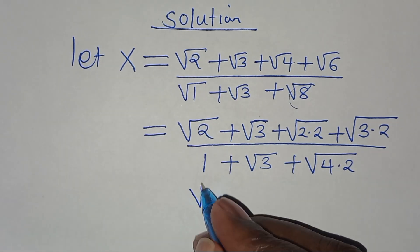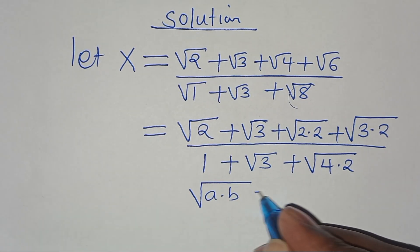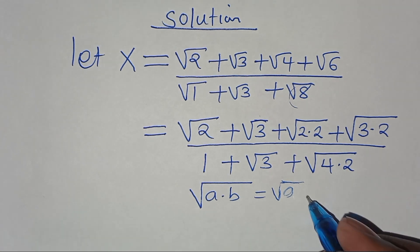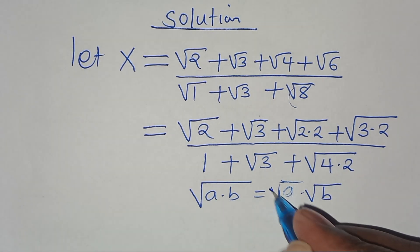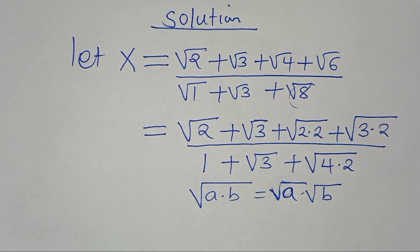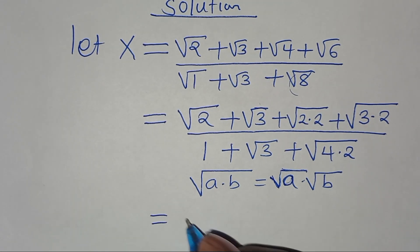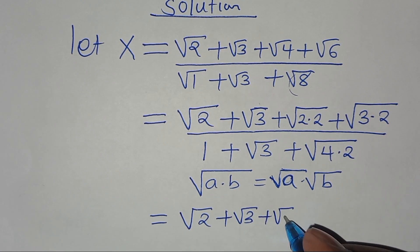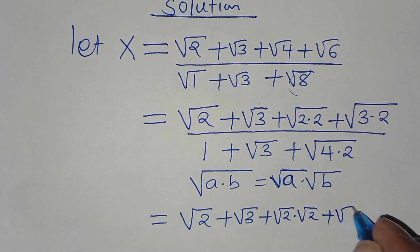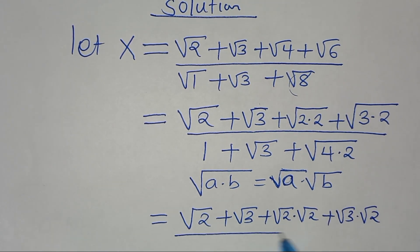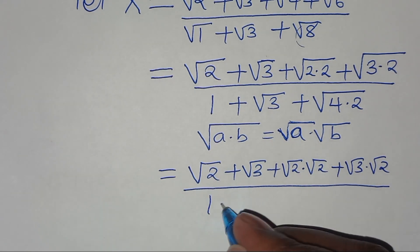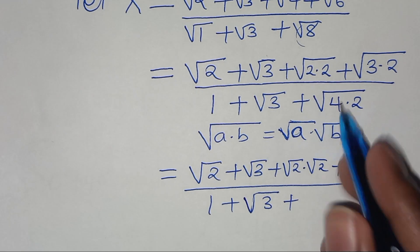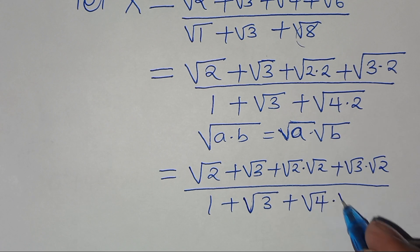Applying the product property of square roots — where square root of a times b equals square root of a multiplied by square root of b — we get in the numerator: square root of 2 plus square root of 3 plus square root of 2 times square root of 2 plus square root of 3 times square root of 2, divided by 1 plus square root of 3 plus square root of 4 times square root of 2.